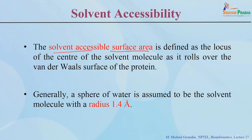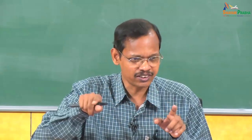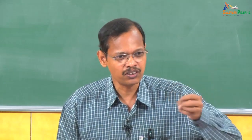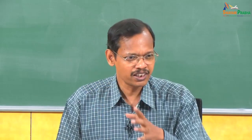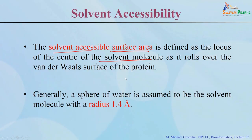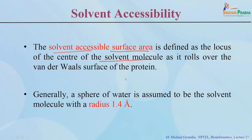Solvent accessible surface area is defined as the locus of the centre of the solvent molecule as it rolls over the van der Waals surface of the protein. We represent protein atoms as interlocking spheres. We then roll a solvent molecule over this protein and see how far they are in contact — that is the contact area. How far the centre of the solvent molecule rolls on the van der Waals surface is called the accessible surface area.